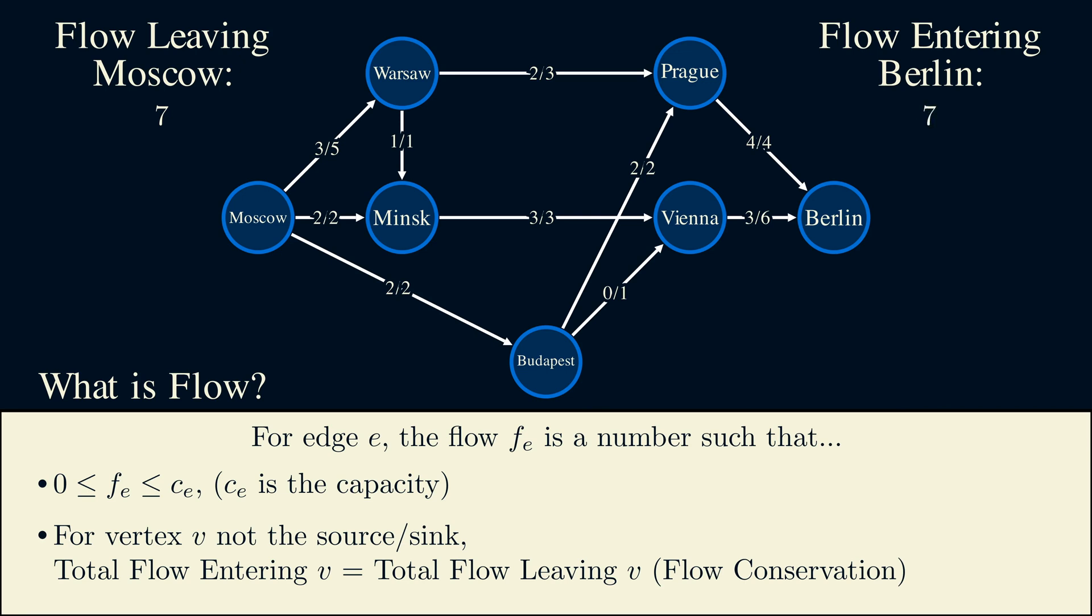Here, we have a flow of seven entering Berlin, but is this the best we can do? Maybe pause here and see if you can find a better solution.